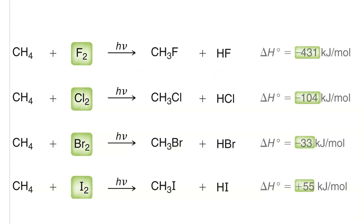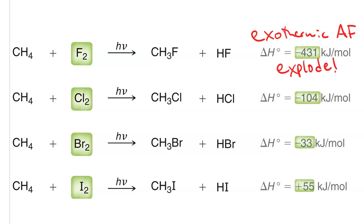If we do the calculation for fluorination, we get that delta H is negative 431 kJ per mole. This is really exothermic — it'll probably explode. For chlorination, it's only negative 104 kJ per mole — still exothermic, still spontaneous, but it's not going to blow up in your face. For bromination, we get negative 33 kJ per mole. This will be slower.